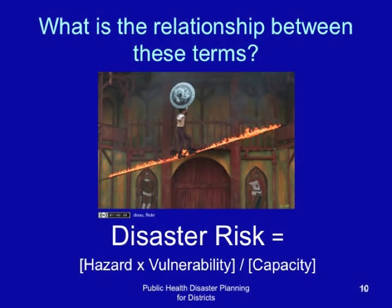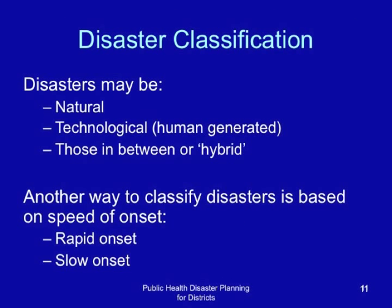Disasters may be natural. Disasters may be technological — that is, human generated. And then there are those that are in between, also called hybrid disasters. Another way to classify disasters is based on the speed of onset. Disasters may be rapid onset or slow onset.